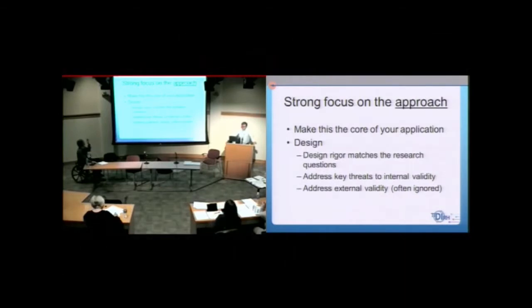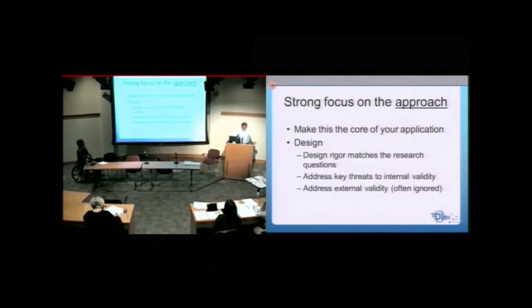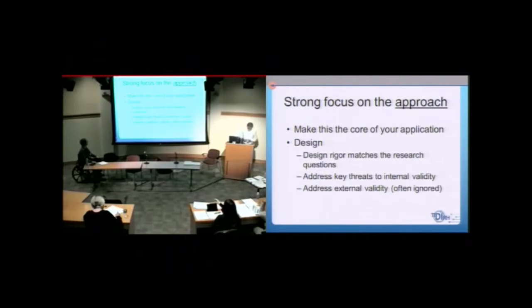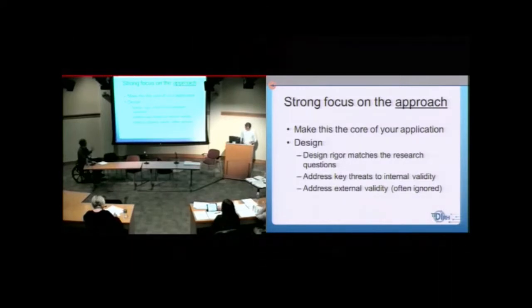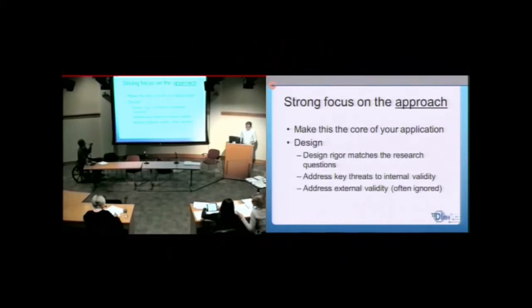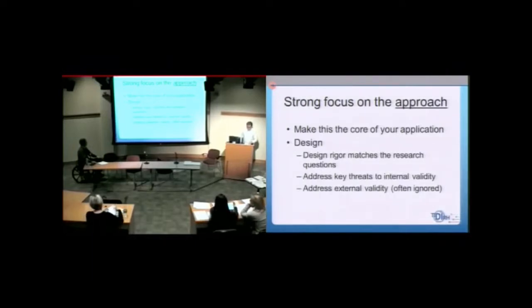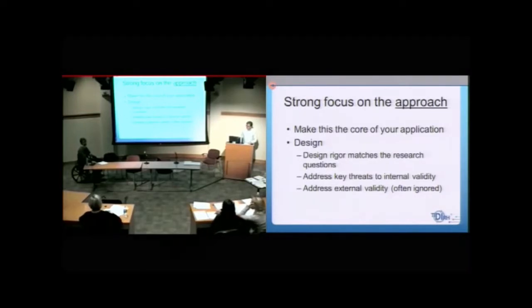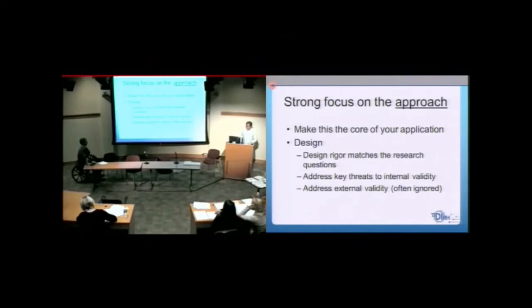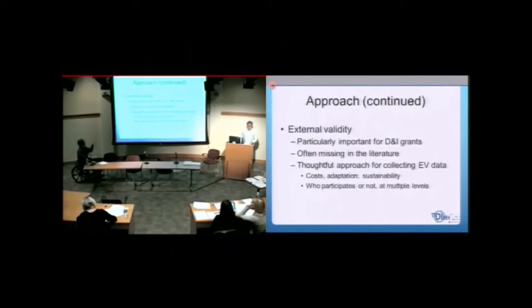And then we're going to start with the approach, even though that's not sequentially what you'd see next. And this is the heart of it. This is most likely what's going to really drive your score overall. And the design, I mean, this fits very well with what Borshtica covered earlier. You know, match the design to the research question and then to the measures. In the application, make sure you attend to internal validity, which is what we often do well. And then make sure that you address external validity as well, which is even more important in a D&I application.